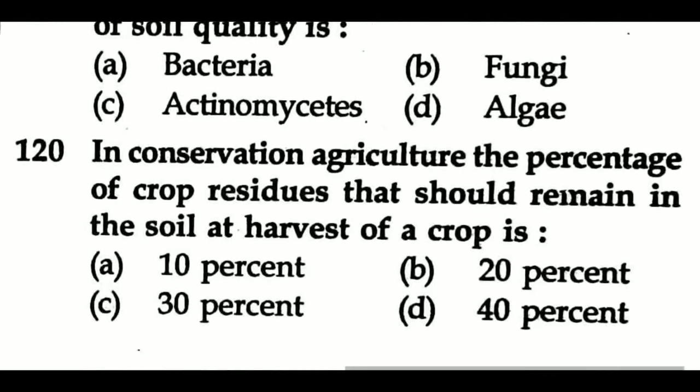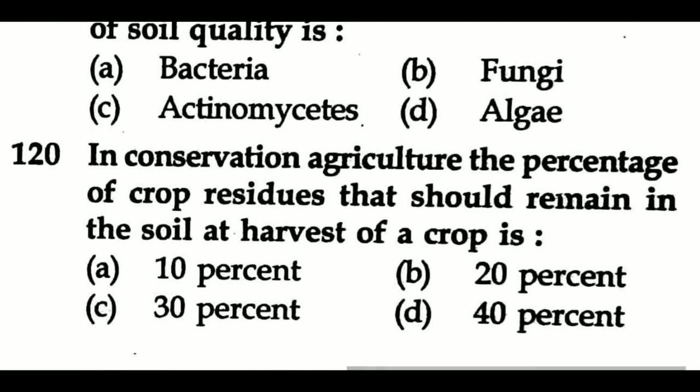Question 120 (final question): In conservation agriculture, the percentage of crop residues that should remain in the soil at harvest of a crop is — Option A: 10%, Option B: 20%, Option C: 30%, Option D: 40%.